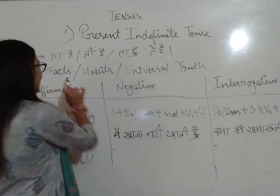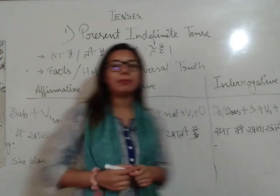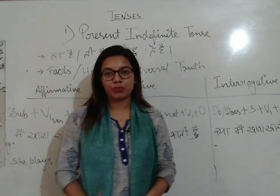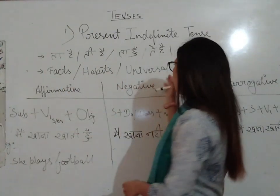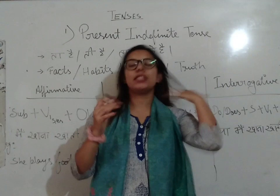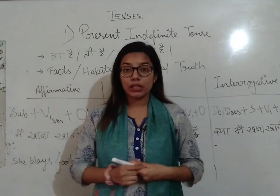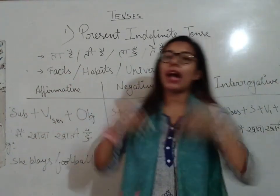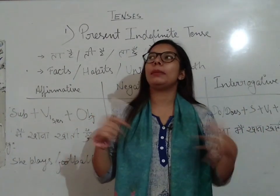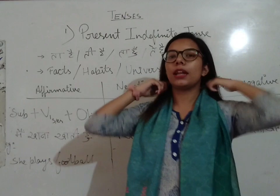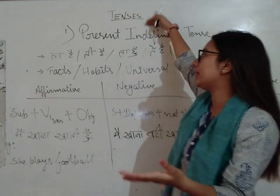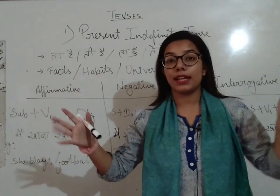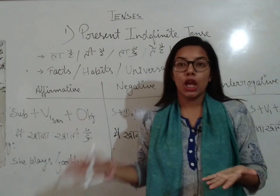The identification of present indefinite tense is: the sentence ends with 'ta hai,' 'ti hai,' or 'te hai.' Second, in present indefinite tense we talk about facts, habits, and universal truths. For example, 'main tumhe padhati hoon' — this is my profession, so it's a fact. A habit example: 'main gaana gaati hoon' — this is my habit.